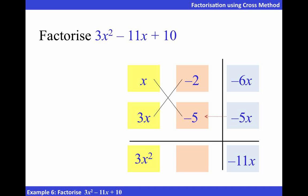Now, let's multiply the terms in the middle column and see whether we get positive 10 as the constant given in the original expression. And therefore, the factors for the expression are x minus 2 and 3x minus 5.